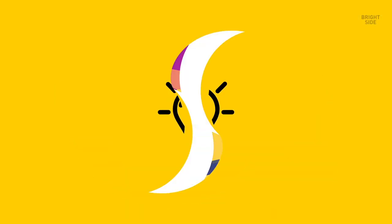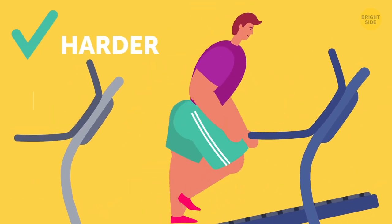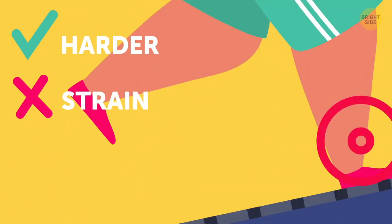It's also a bad idea to go above the 8% incline on the treadmill. Yes, it does make running harder, but at the same time, it puts unnecessary strain on your ankles, back, and hips.